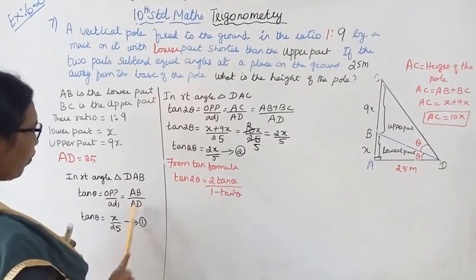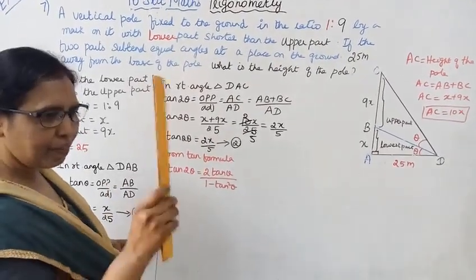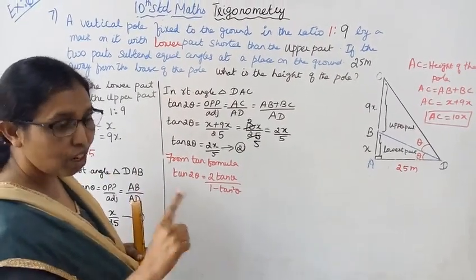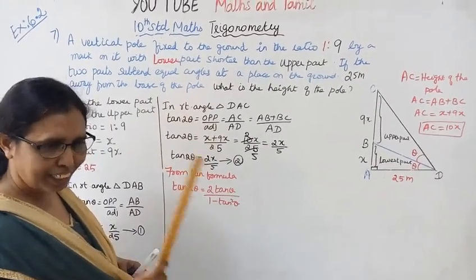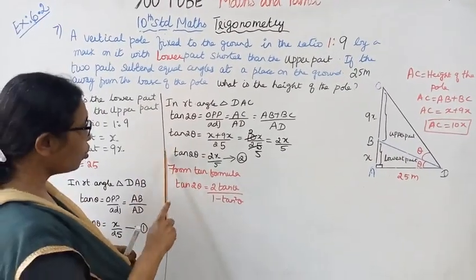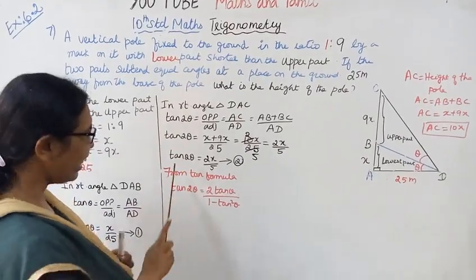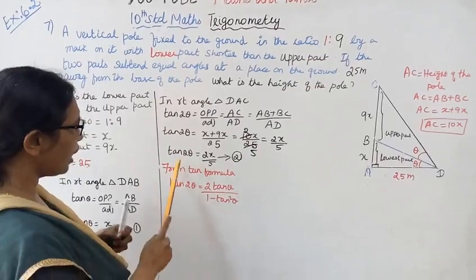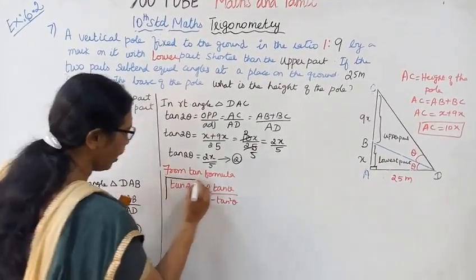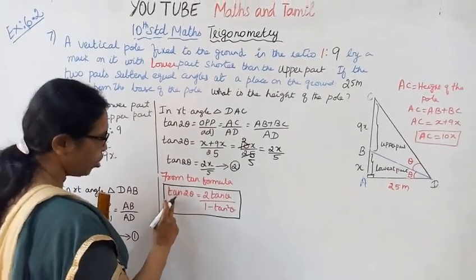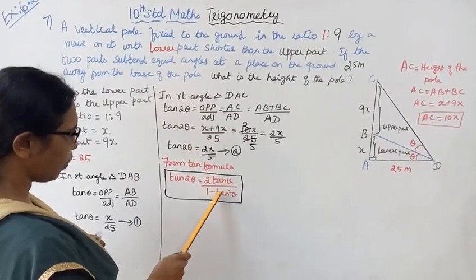Now, tan 2 theta is different from 2 tan theta. Tan theta plus tan theta is 2 tan theta, not tan 2 theta. The correct formula is: tan 2 theta equals 2 tan theta divided by 1 minus tan squared theta.